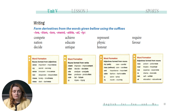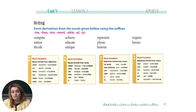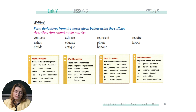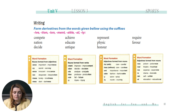All right, practice time again — another activity for you. This time we have to form derivatives from the words given below using the suffixes shown in pink. But before I let you practice on your own, let's have a look at the word formation examples I've prepared. We form nouns from adjectives, nouns from verbs, and adjectives from nouns. You have the examples below.